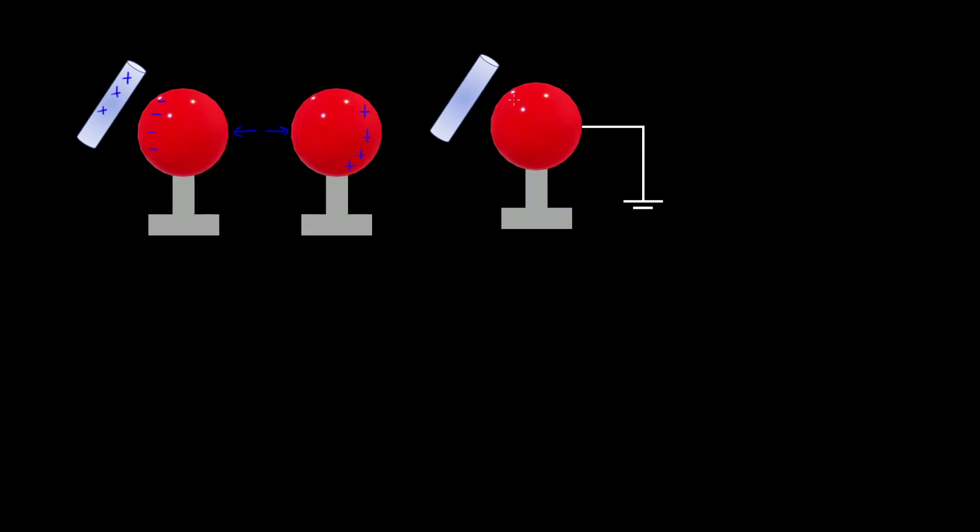Another way we can charge a conductor is by grounding it. So if we have this negatively charged rod and we bring it near this conductor, that's going to repel electrons away this time and leave a region of positive charge. We have something like this, but of course you're going to have a uniform distribution of charge on the surface of this spherical conductor.